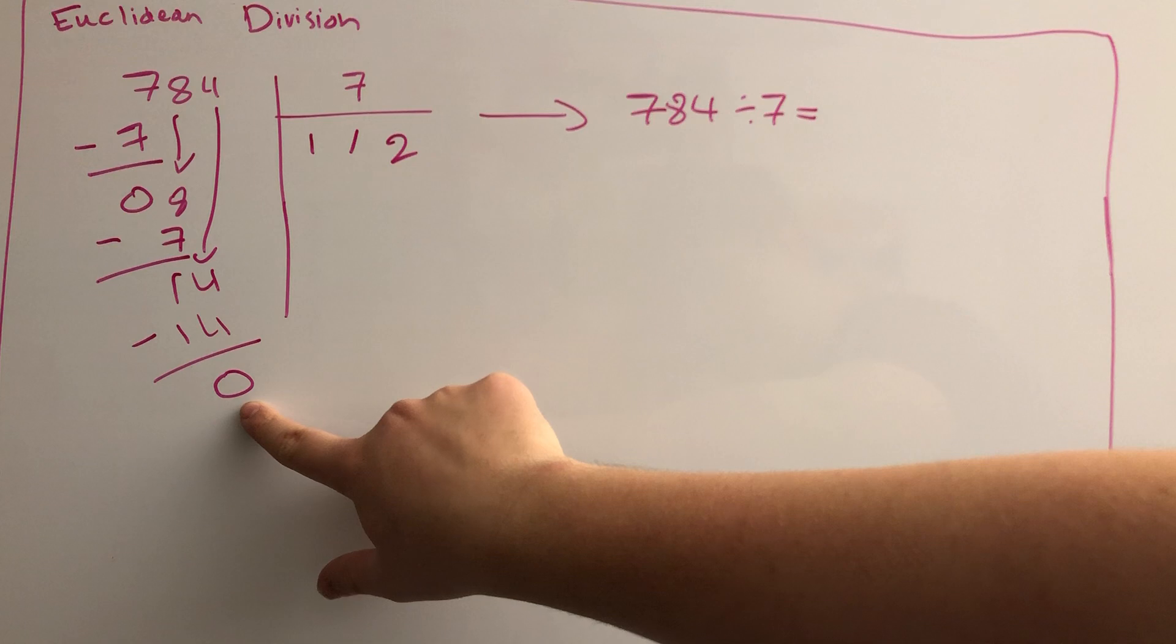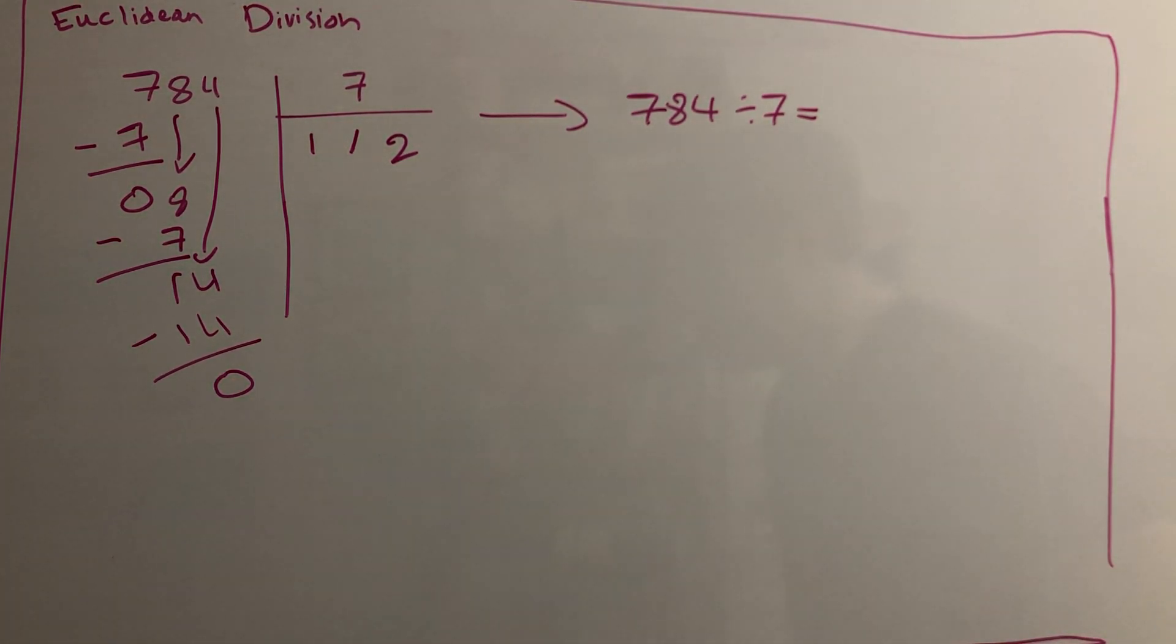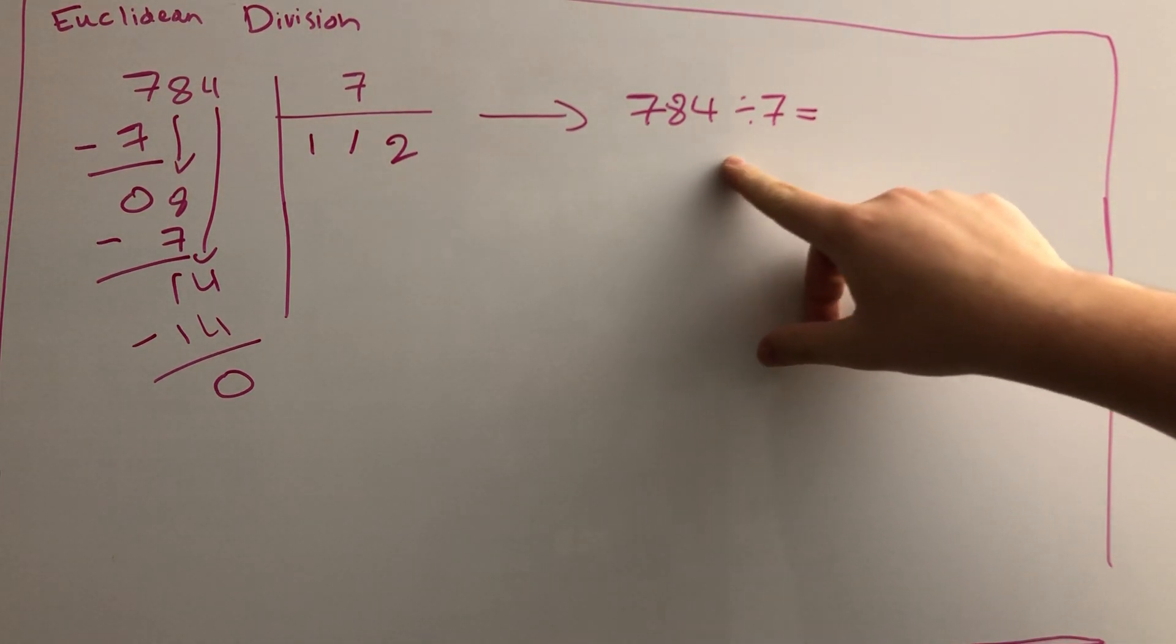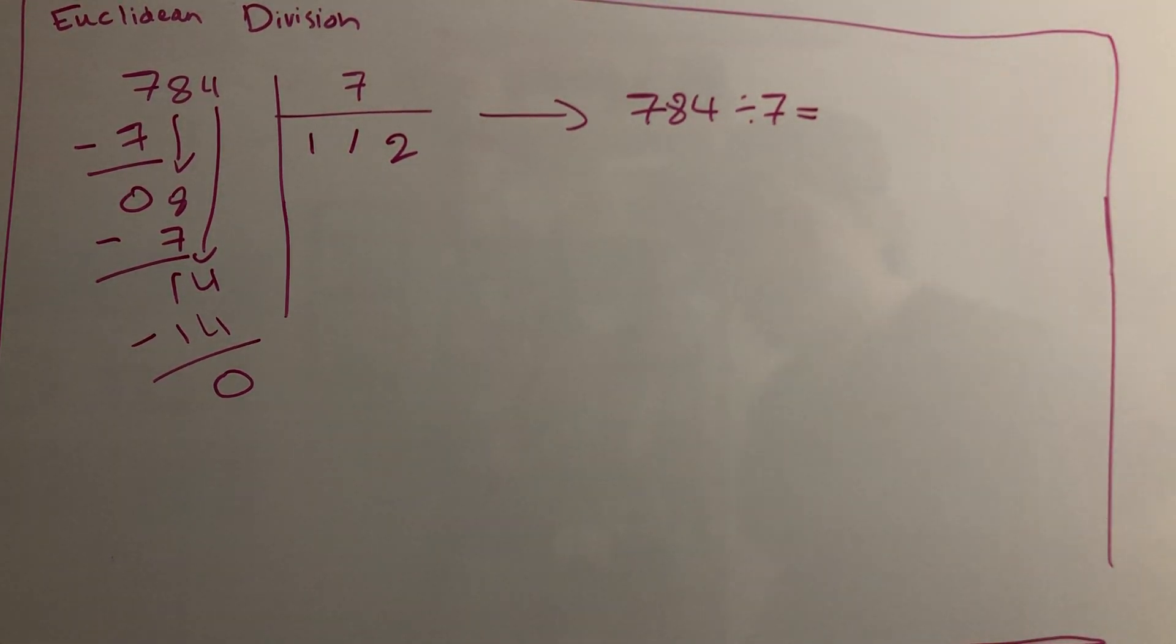When we get 0 at the end here, it's a perfect division, which means there's no remainder. So here we can answer the question: 784 divided by 7 equals 112.